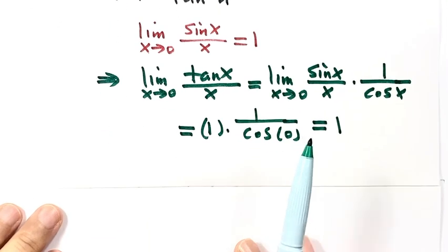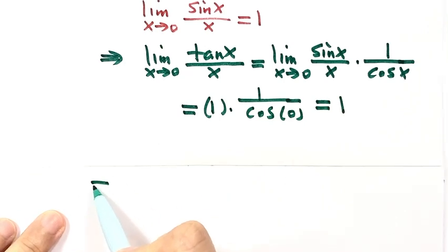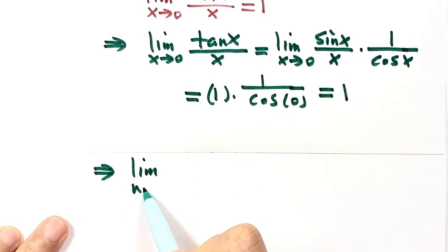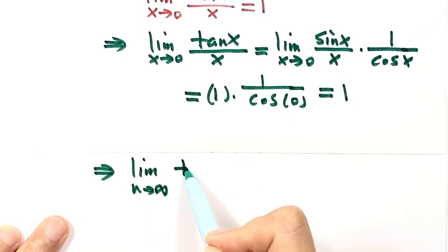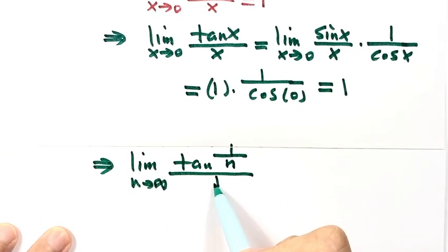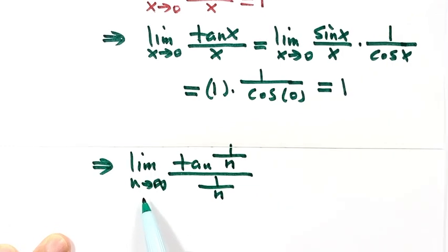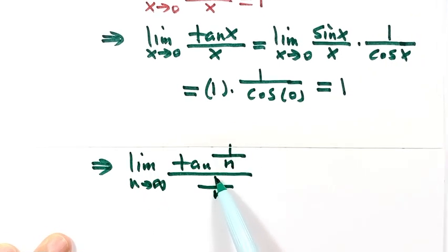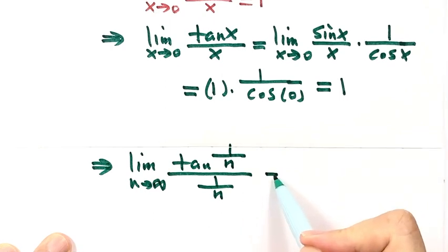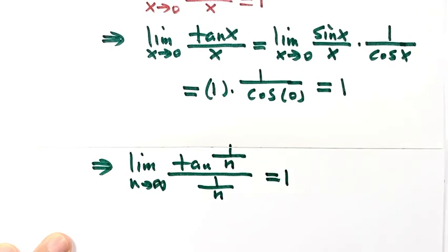From this result, we have: the limit as n goes to infinity of tangent(1/n) over (1/n). Because as n goes to infinity, 1 over n goes to 0, so based on our result, this limit also equals 1.